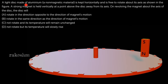A light disc made of aluminium, a non-magnetic material, is kept horizontally. We can see here that this disc is kept horizontally and is free to rotate about its axis as shown in the figure. A strong magnet is held vertically at a point above the disc, away from its axis.